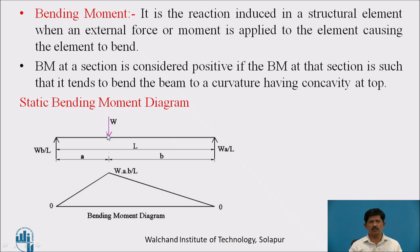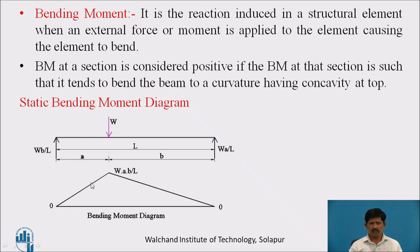For static loading, a load W is applied at a fixed point. We find reactions Ra = WB/L and Rb = Wa/L. The bending moment at section D is reaction into distance, that is WB/L into A, which gives WAB/L. You can verify this by considering the right section as well. This is the bending moment diagram for the static load condition.